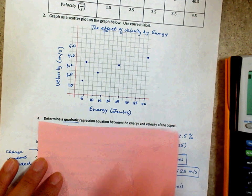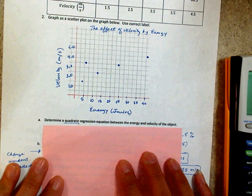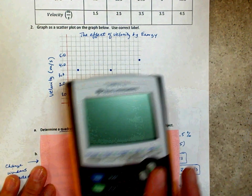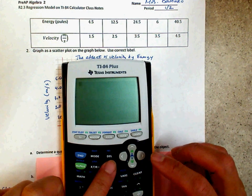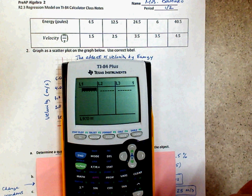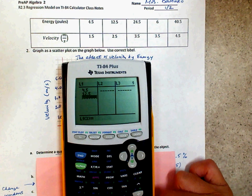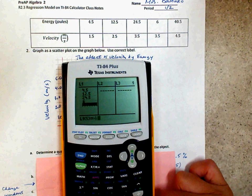Now, let's go to number two. It says, determine a quadratic equation between the energy and velocity of the object. Alright, so I'm going to go and enter this. Go to stat, because this is all statistics. I'm going to enter my information. 4.5 joules, 12.5, 24.5, 6, 40.5.